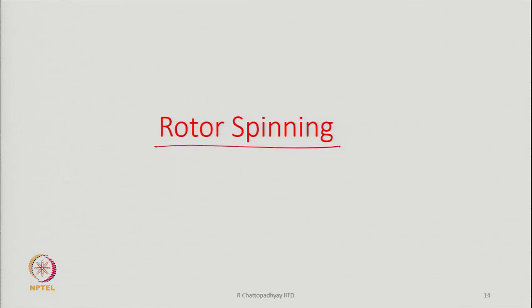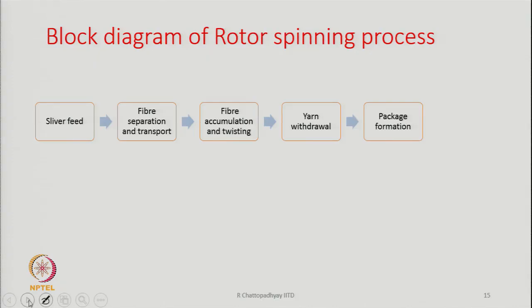With this we now come to open end spinning — as we have discussed, we will see that this principle is used in the case of rotor spinning. Rotor spinning is one machine where the actual yarn formation principle is open end spinning. So we first take up this, and this is one of the most successful spinning technologies. Now, the block diagram of the rotor spinning process — if you look at the rotor spinning process, first there is a sliver feed arrangement by which sliver will be fed.